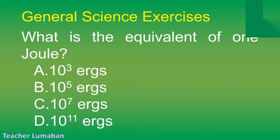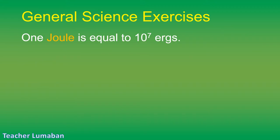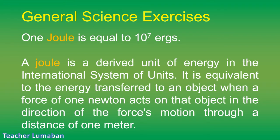The correct answer is Letter C: 10 to the 7 ergs. 1 joule is equal to 10 to the 7 ergs. A joule is a derived unit of energy in the international system of units. It is equivalent to the energy transferred to an object when a force of 1 newton acts on that object in the direction of the force's motion through a distance of 1 meter.